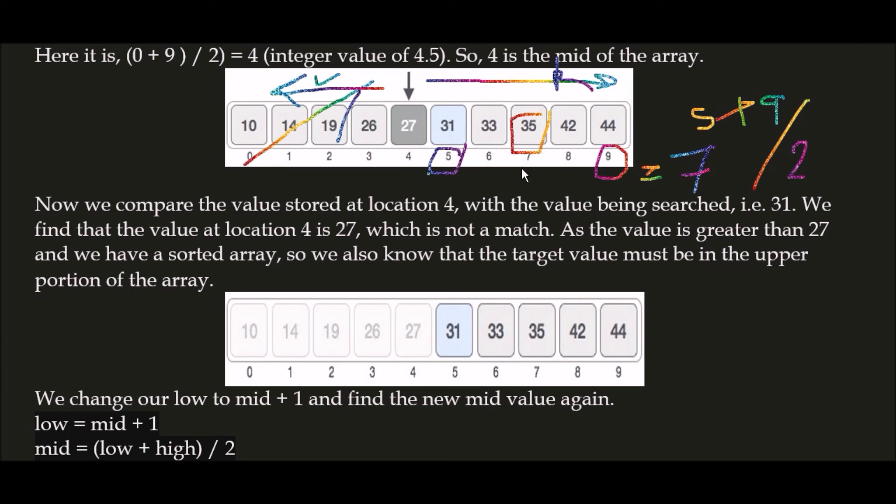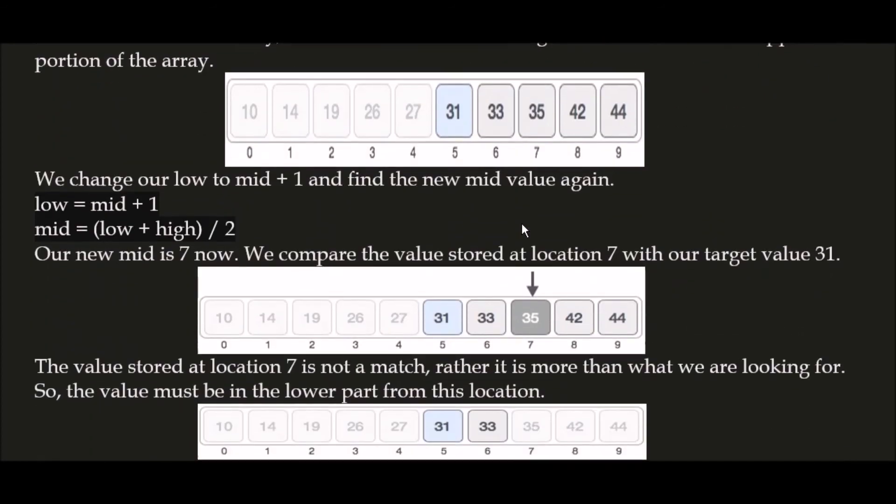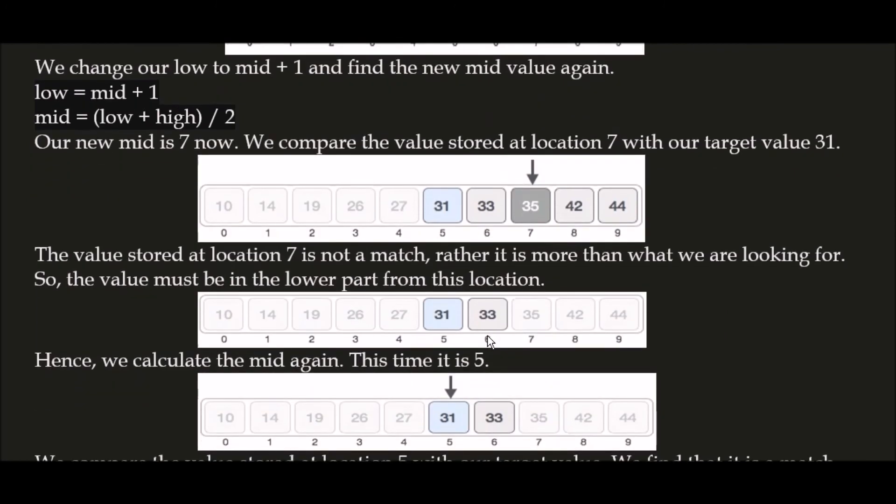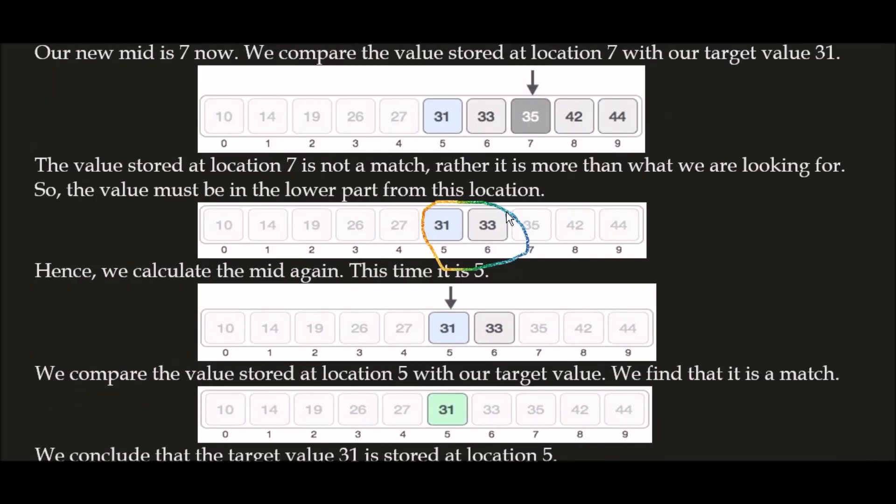So now the new array we choose for the next iteration will be the left side of the array, because 31 is less than 35. The target value is less than the mid value. So our array will be this one, as shown here. We again apply step one and find the mid value: 5 plus 6 divided by 2 equals 5.